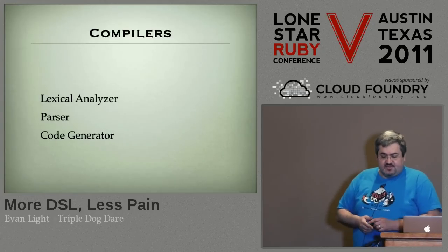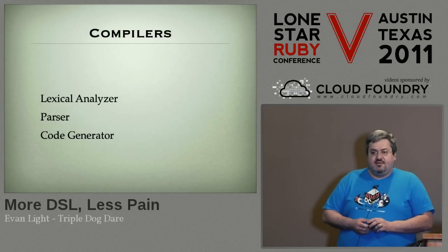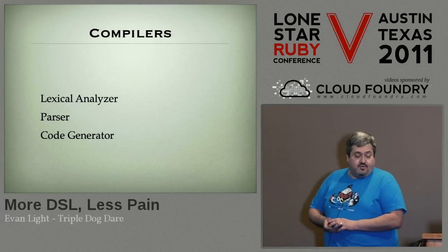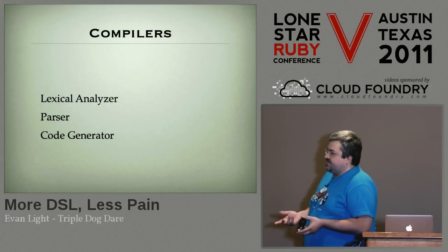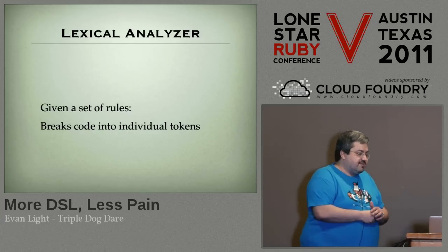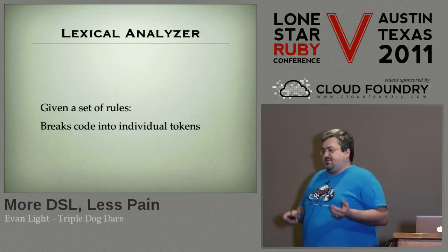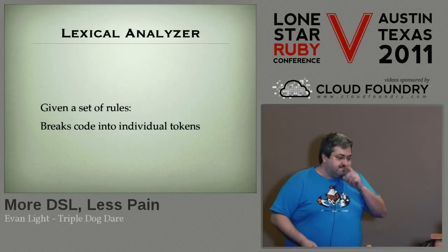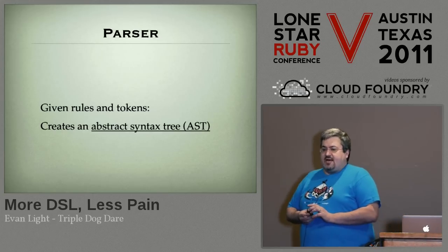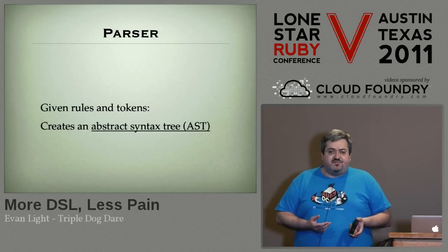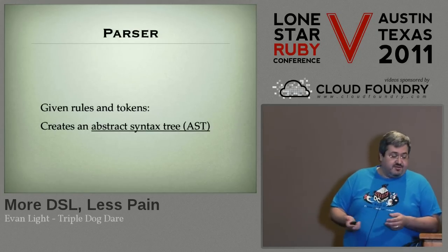Lispy is really a kind of compiler, I realized — and to me, this was kind of cool. I was an undergrad without a compiler class; I felt like I missed out, so this was a learning experience. A compiler is made up of three parts: a lexical analyzer, a parser, and a code generator. A lexical analyzer breaks the code down into individual tokens based on a set of rules. The parser takes those tokens and generates an abstract syntax tree, which is a representation of the code minus all the syntactical stuff — it's the data and what you're trying to do to it.